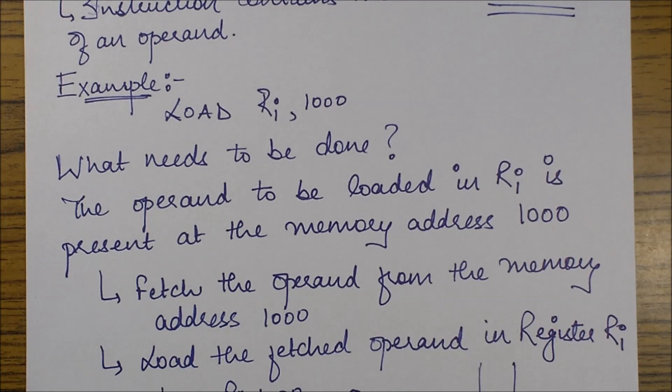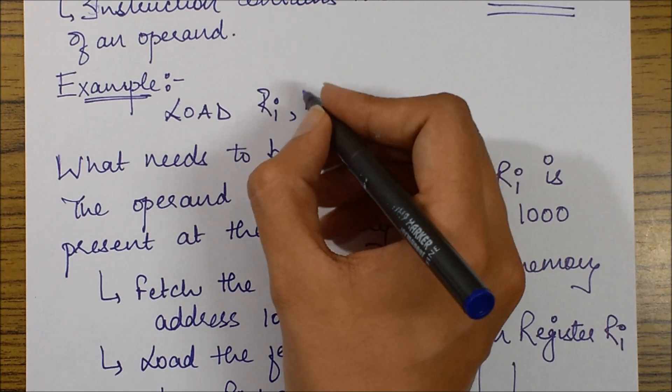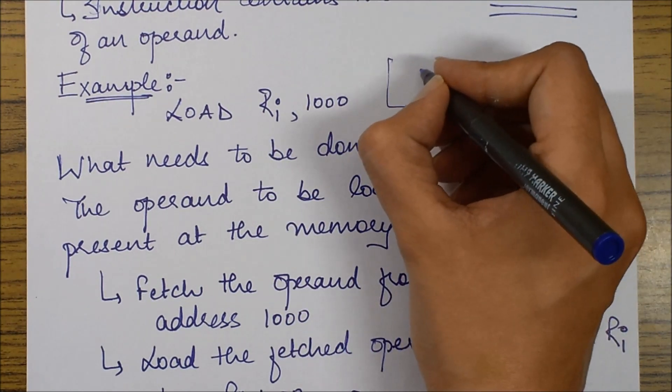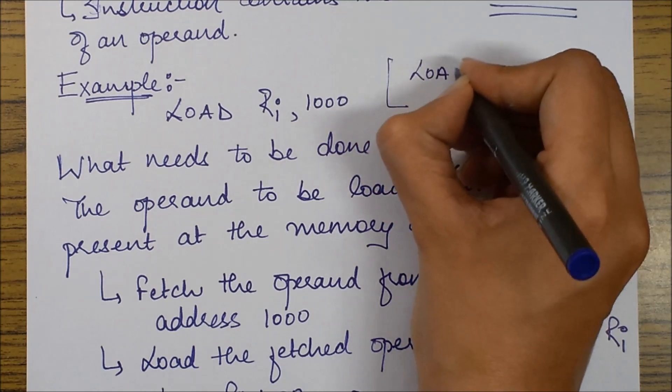So in this particular instruction you can see that there is no hash present over here, which essentially in the case of immediate addressing mode the instruction had.